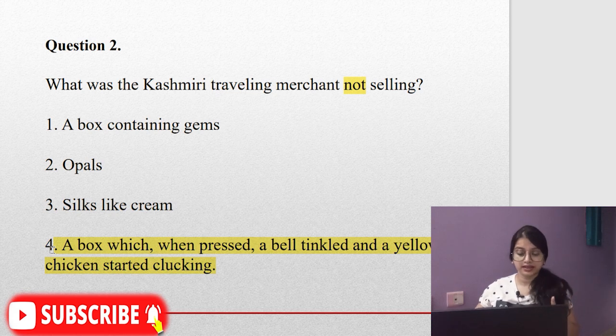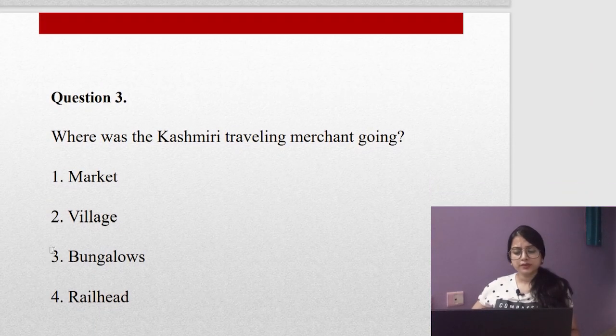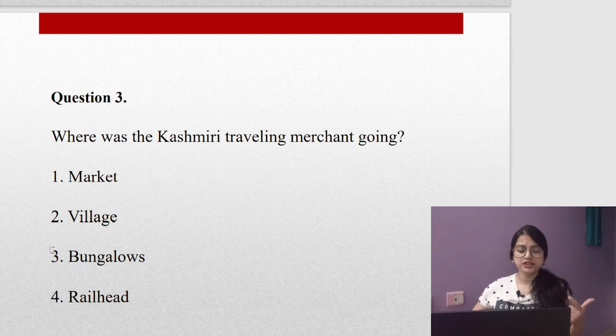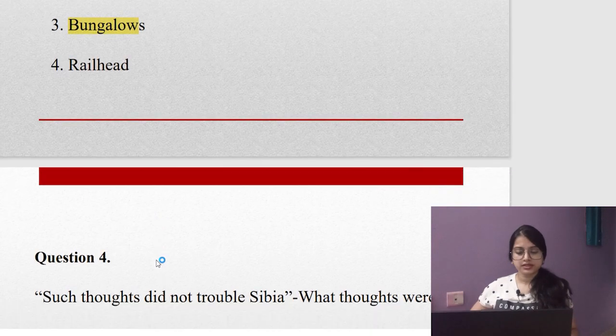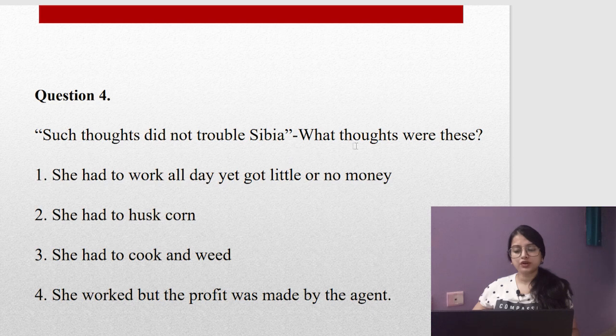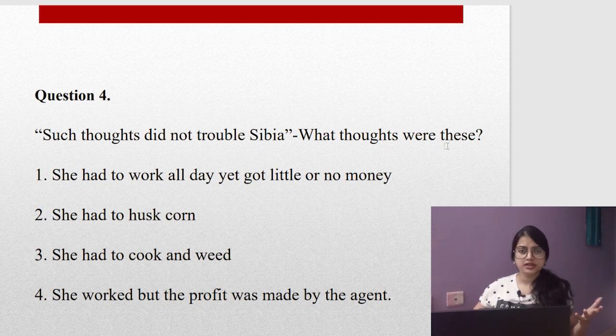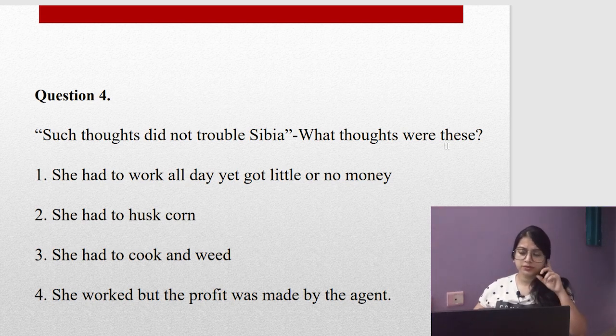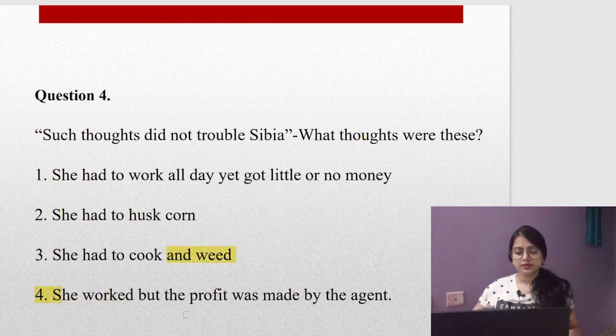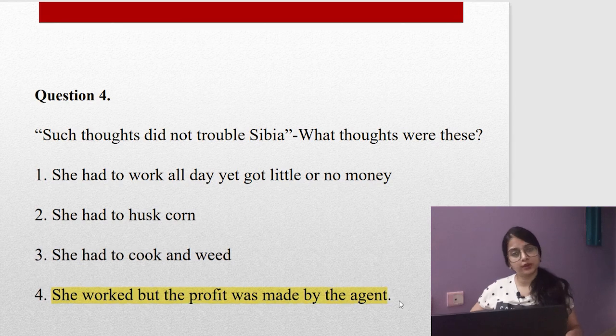Question three: Where was the Kashmiri traveling merchant going? Is it the market, the village, the bungalows, or the railhead? Yes, it is the bungalows. Question four: Such thoughts did not trouble Sibia. What thoughts were these? She had to walk all day yet got little or no money, she had to husk corn, she had to cook and weed, or she worked but the profit was made by the agent. Yes, the last one. This did not bother Sibia at all.